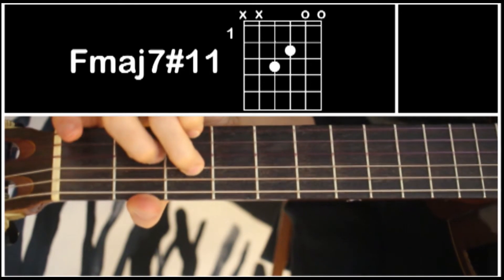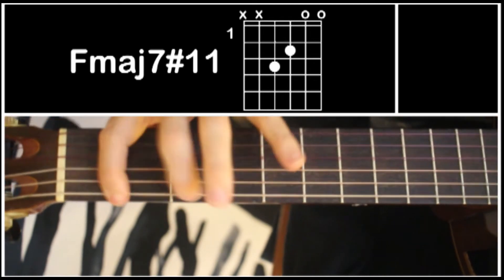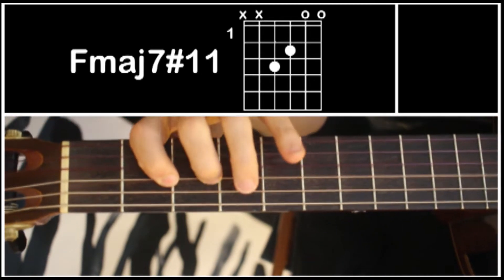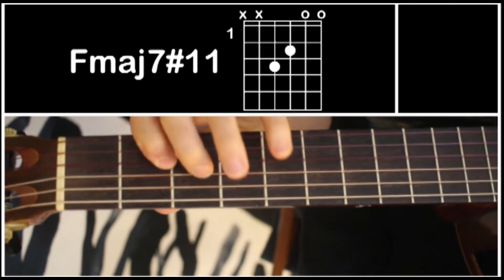It's a very colorful chord and the sharp 11 basically means if you're counting up the major scale: 1, 2, 3, 4, 5, 6, 7, 8 being the octave, and keep going, 8, 9, 10, 11.